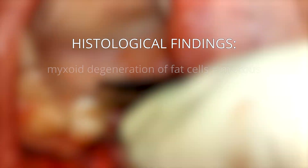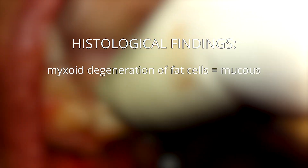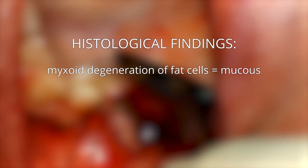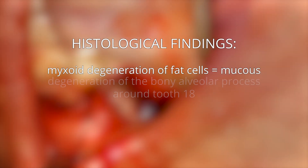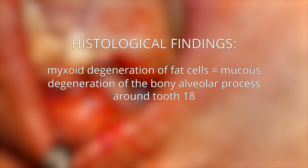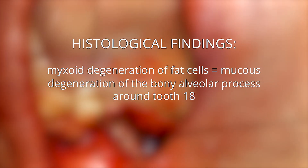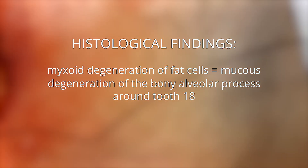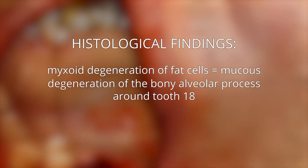The histological assessment: the myxoid degeneration of the fat cells is essential. Myxoid describes the mucus-like degeneration of the bony alveolar process around tooth 1-8, as can be seen in the video.